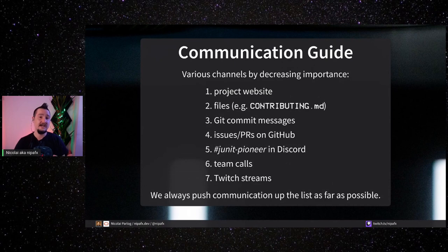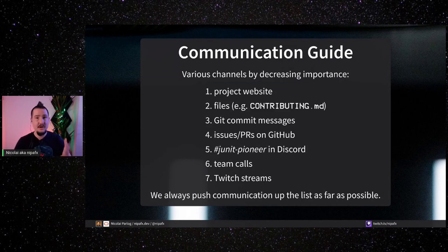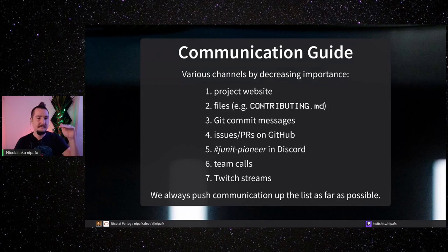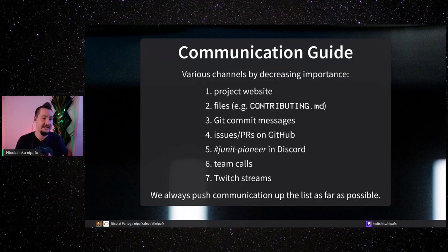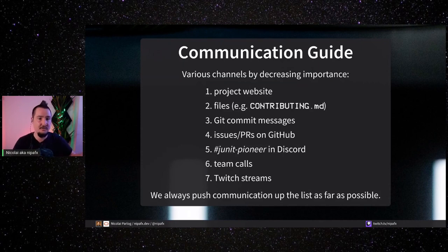We described in the contribution guide how we communicate, because we have a bunch of different channels: the project website to communicate to users, files in the repo like the README and contributing guide, commit messages, issues and pull requests on GitHub, a Pioneer channel in Discord, occasional team calls, and Twitch streams. We form a hierarchy from most important to least important. Every time something happens — say on a team call — the decision gets pushed into an issue or a commit message. If something in a commit message is an important detail, maybe it should end up in the documentation on the project website. We try to push stuff up this list as far as it makes sense.